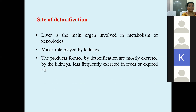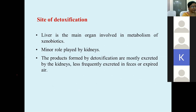Where does all this occur? The site of detoxification. Liver is the main organ involved in metabolism of xenobiotics; a minor role is played by the kidneys. As gluconeogenesis occurs in the liver, detoxification and bilirubin conjugation also occur in the liver. The products formed by detoxification are excreted — commonly from the kidneys in the urine, less frequently in the feces or through the air, or in the bile.